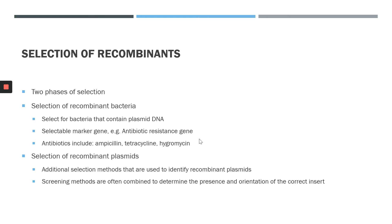The second step is to select for recombinant plasmids — plasmids that contain the insert DNA fragment. There are various selection methods used to identify recombinant plasmids, and these screening methods are often combined to ensure that the insert DNA fragment is present in the vector and has been inserted in the correct orientation.